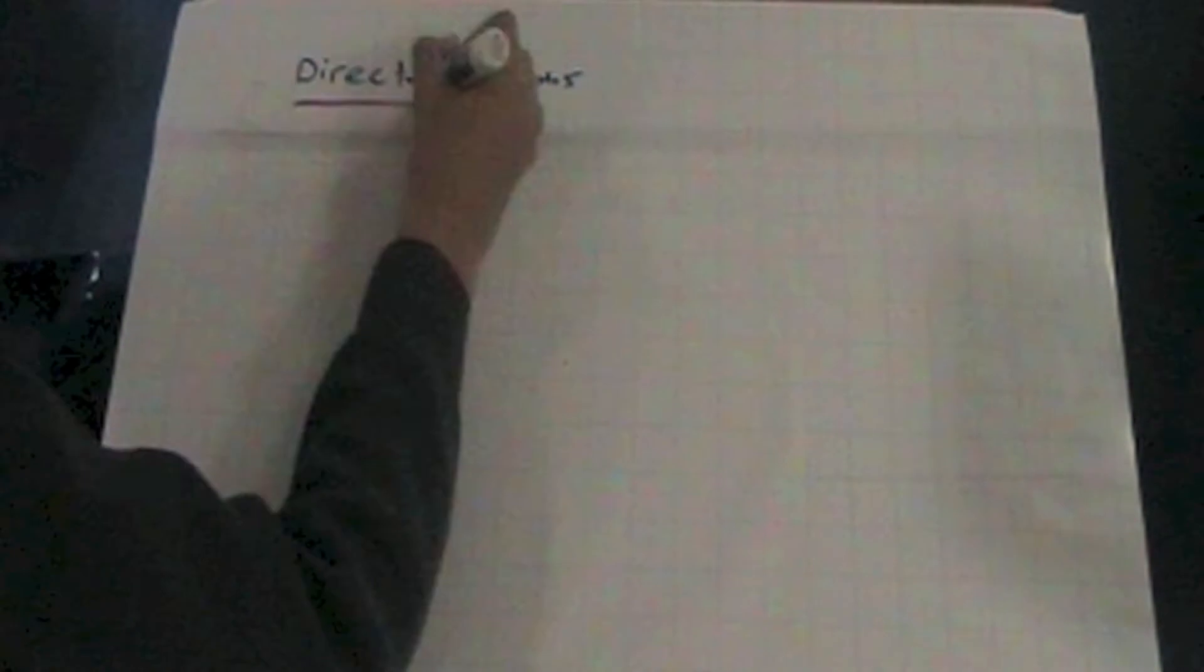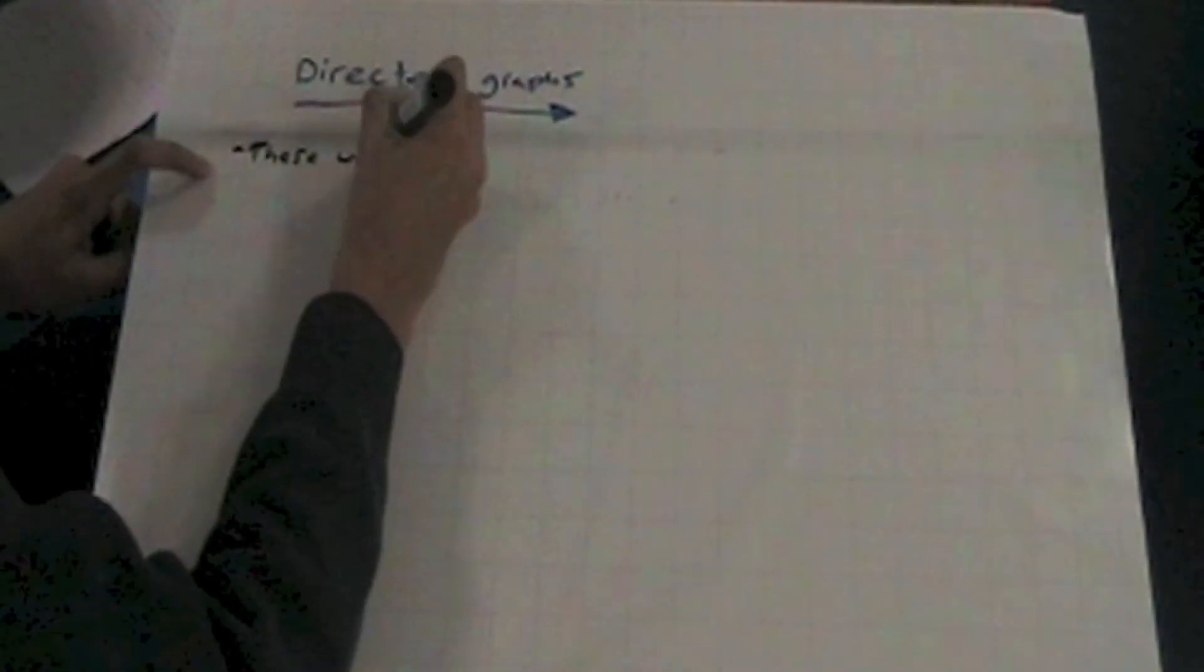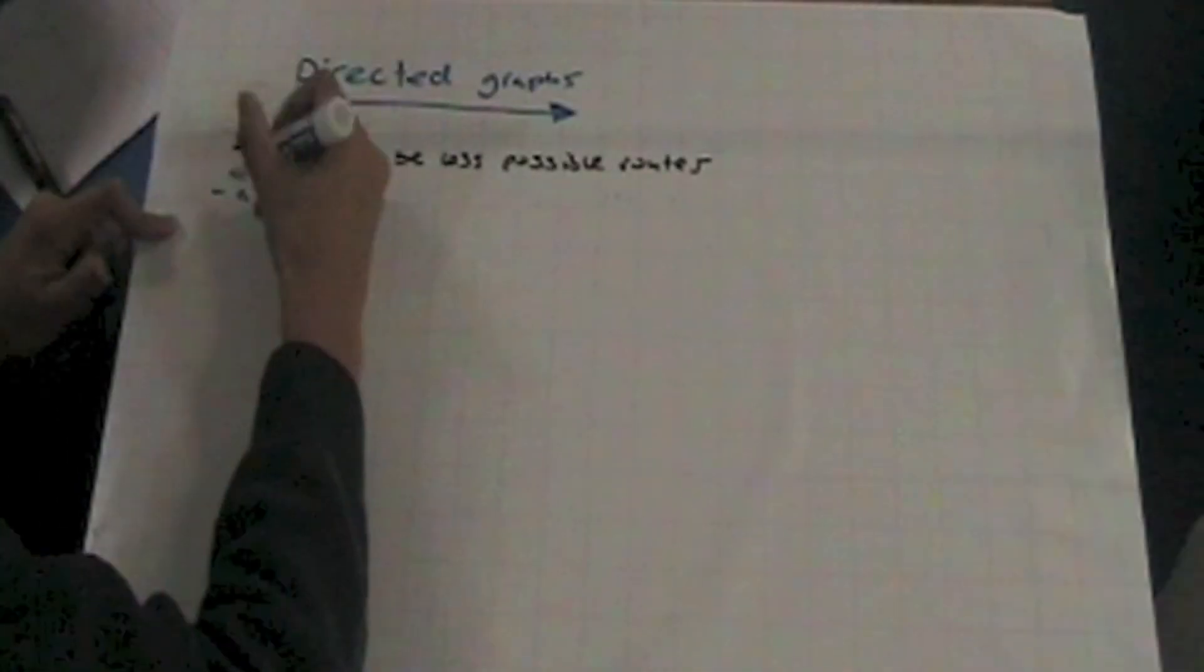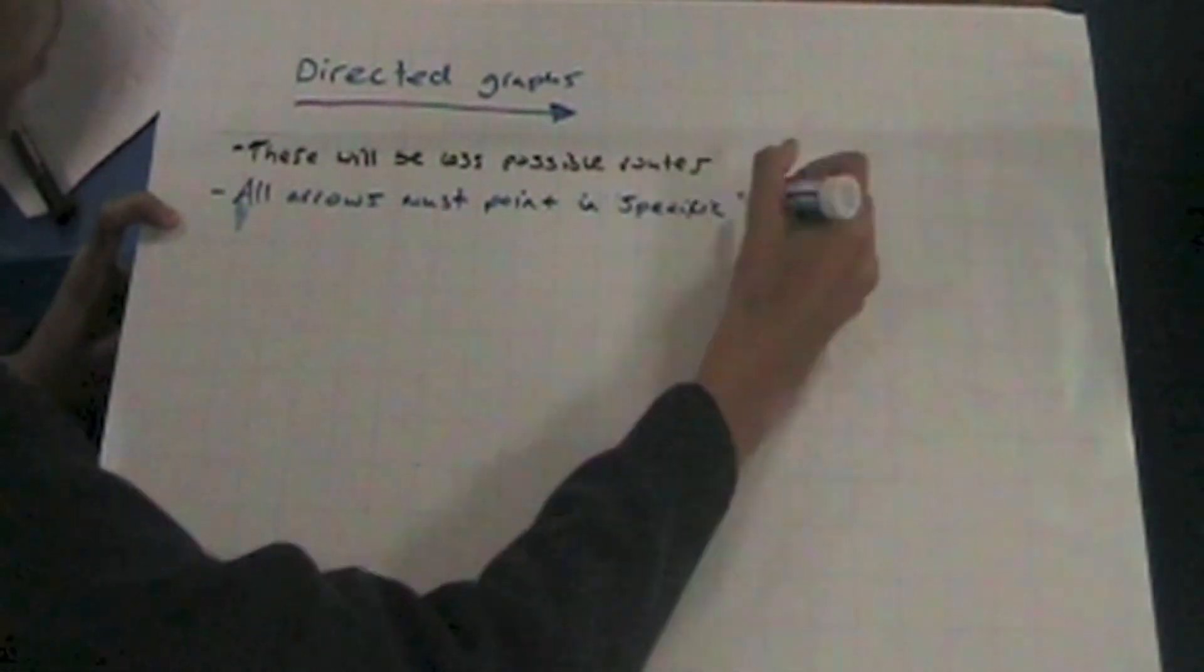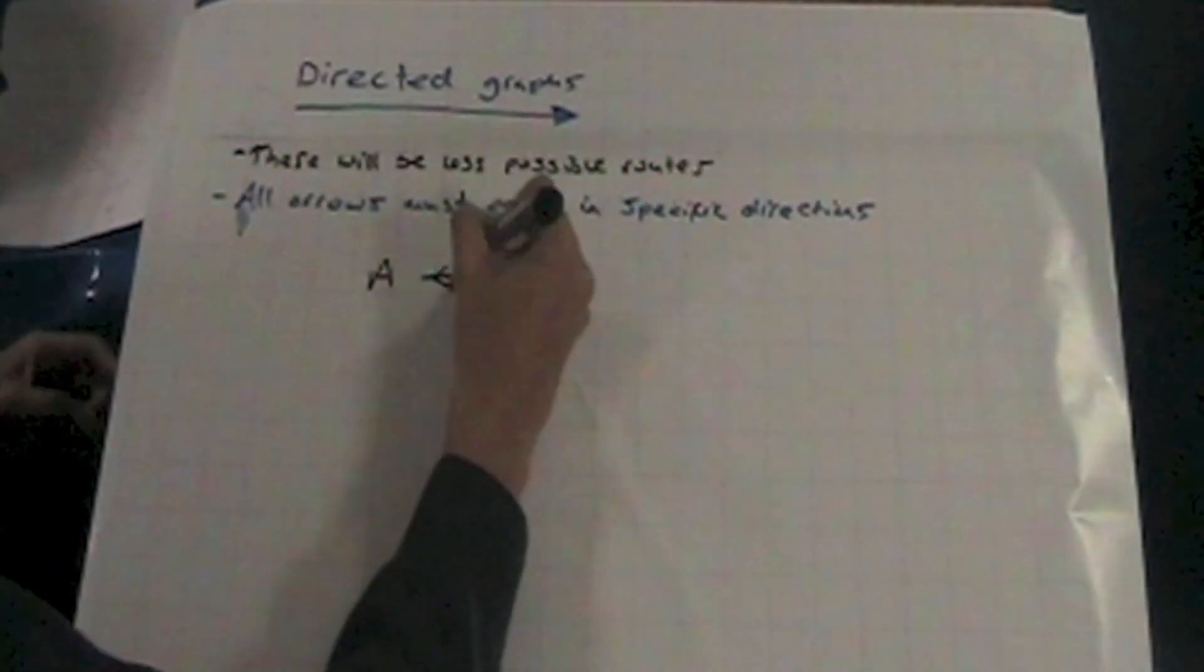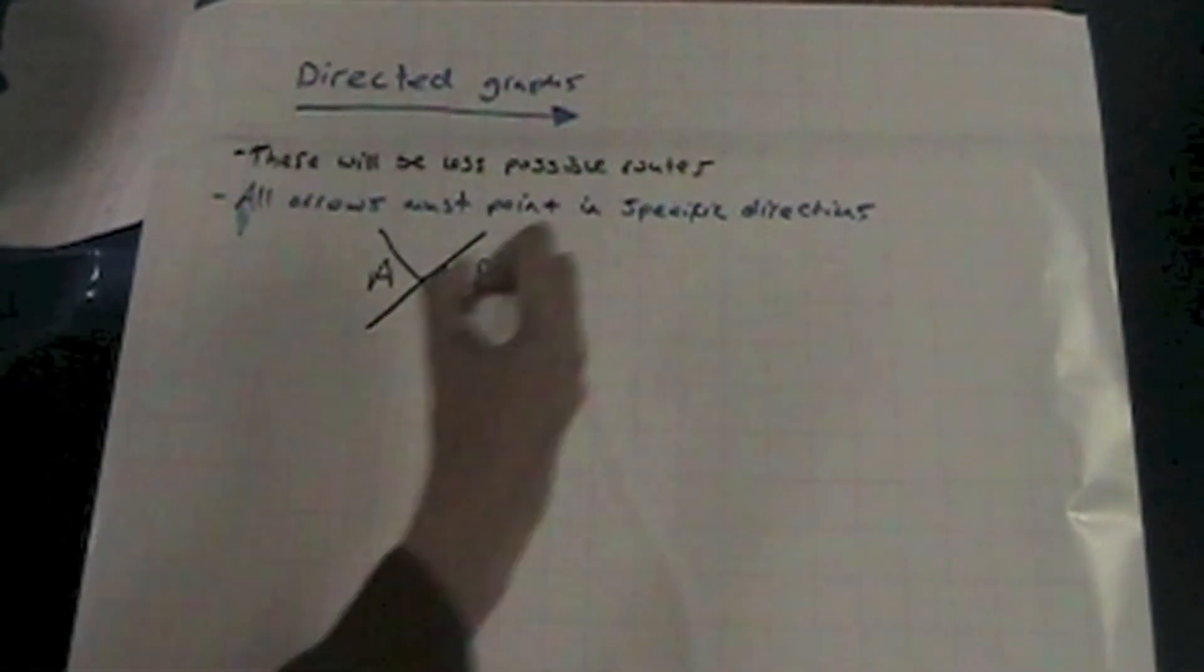There are many adapters to Eulerian graphs, like directed graphs. Directed graphs essentially constrict your freedom of choosing which way you want to go. For example, you can't get from A to B if you're only allowed to go from B to A. So you'll have to turn the arrow around.